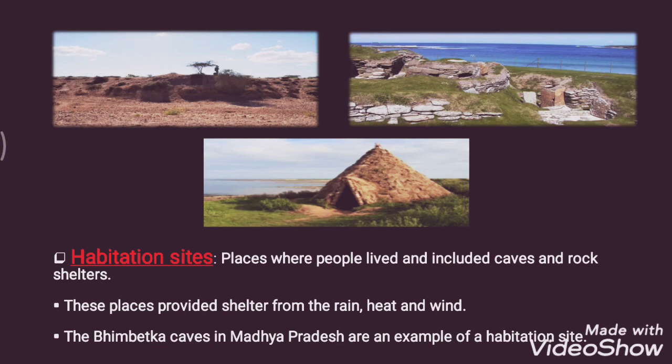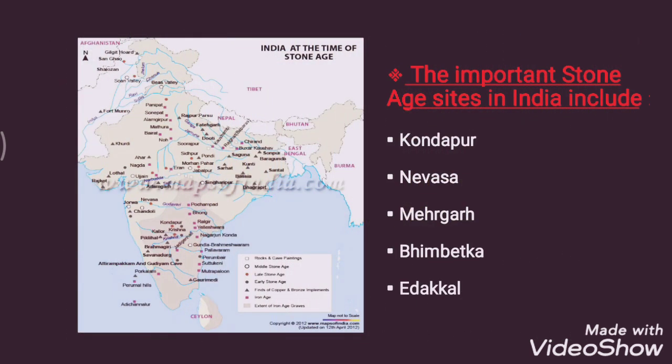The different important Stone Age sites in India include Kondapur, Navasa, Mahurgad, Bhimbetka, and Edhakal. These are the important Stone Age sites you need to remember.